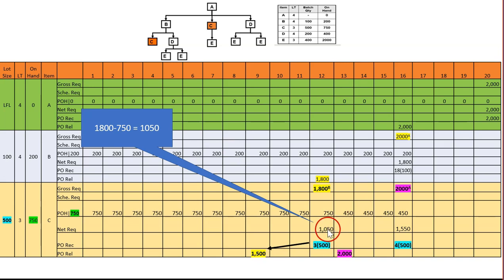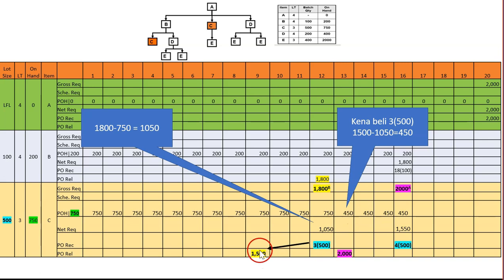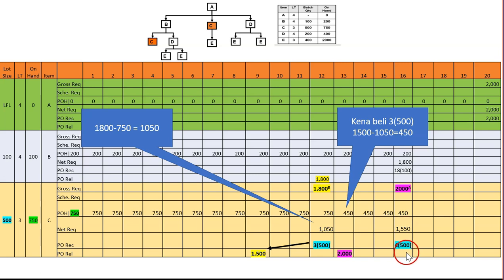We bought 1,500 but only needed 1,050, so the balance is 450 carried forward. Moving to weeks 13, 14, 15 — no gross, so we carry the 450. At week 16 we have a gross of 2,000, so 2,000 minus 450 leaves 1,550 net. Since lot size is 500, the nearest multiple is four lots, giving 2,000. Lead time three: one, two, three — we release here.